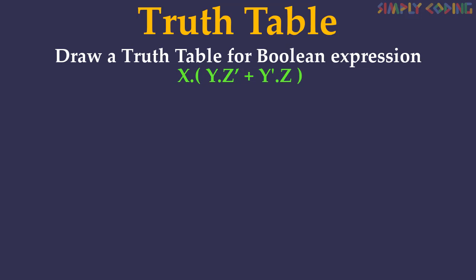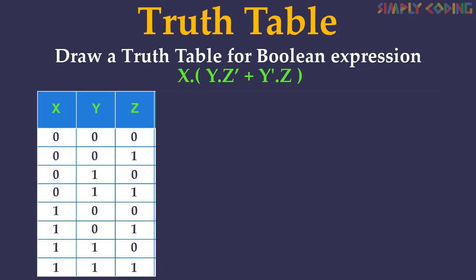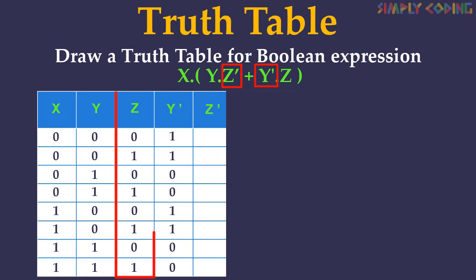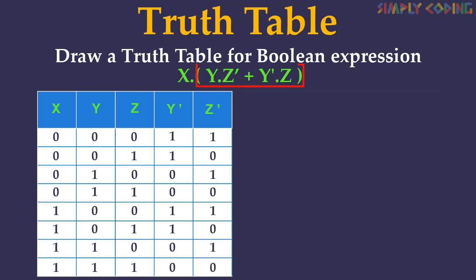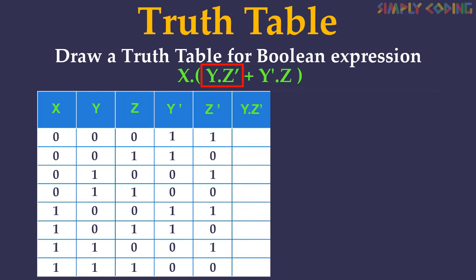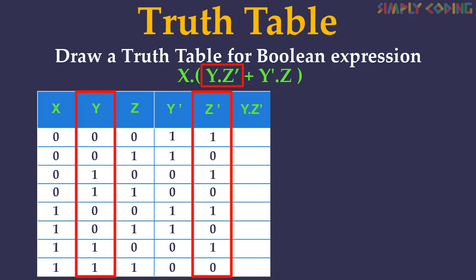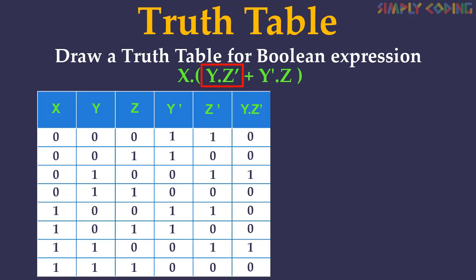Let's solve another one. We have to draw a truth table for x · (y·z̄ + ȳ·z). Since this is a three-term expression, we will first set up combinations of input values using binary numbers from zero to seven. We use the standard BODMAS principles of algebra. We first solve for NOT — here there is not-Y and not-Z. So we take the Y column and negate it, and take the Z column and complement it. Next we solve the expression inside the bracket, starting with Y dot Z-bar.